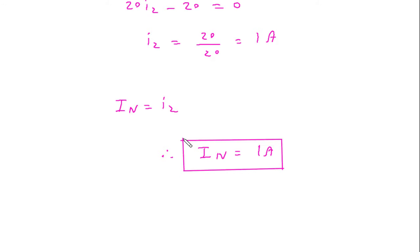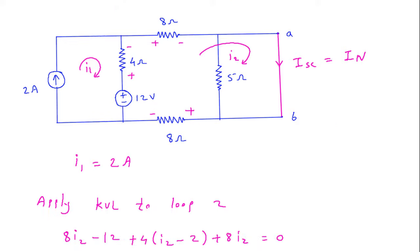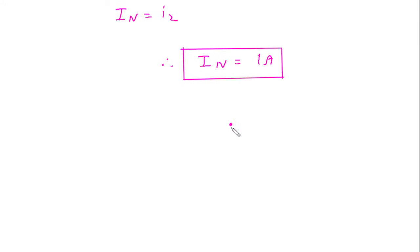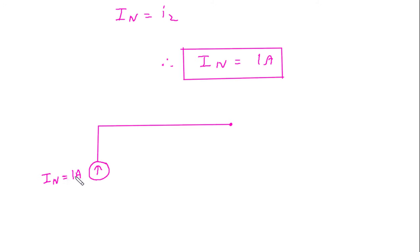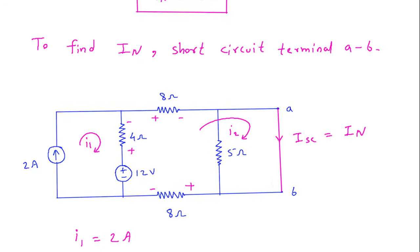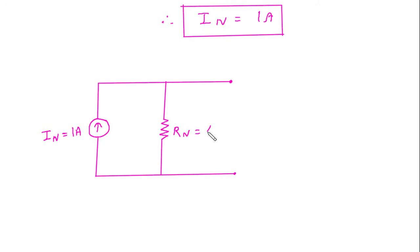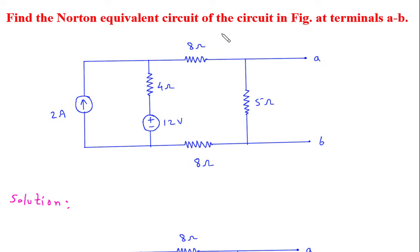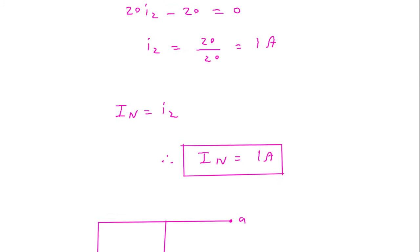Now we have the value of In and Rn, so from this we can draw the Norton's equivalent circuit. This is the current source In which is equal to 1 Ampere, and this is Norton's resistance Rn which is equal to 4 Ohm. This is terminal A, this is terminal B. So this is the Norton's equivalent circuit.